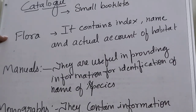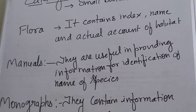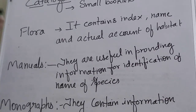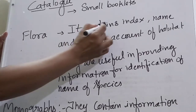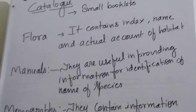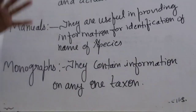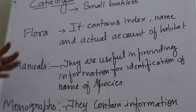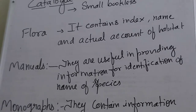The next aid is flora. Flora contains an index, name, and actual account of habitat. Habitat means where animals live. Just as your textbook has an index telling you which chapter is where — chapter 1 is the living world, chapter 8 is the cell — flora similarly contains index, name and actual account of habitat, for example the terrestrial or aquatic habitat of species. It provides information about where organisms live.